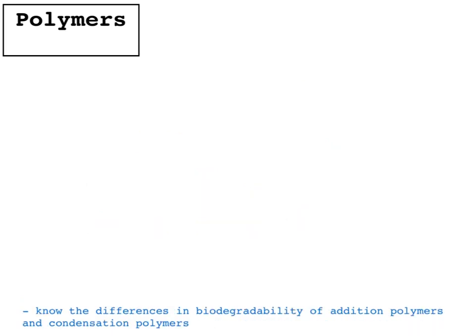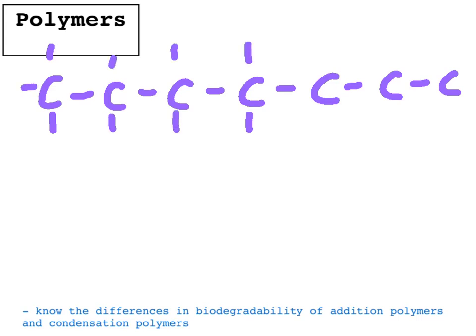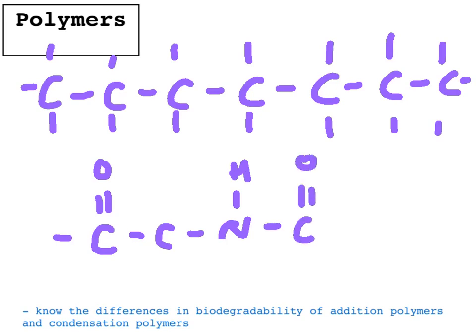So to understand the differences in biodegradability of the two different types of polymer, you've really got to look at the structure of them. So this is an addition polymer, where it just goes on forever in both directions. And you've got groups on the carbons, and then you might have a condensation polymer. Let's make an amide link there. So this is an amide link in the middle, an NH with a carbon R group.